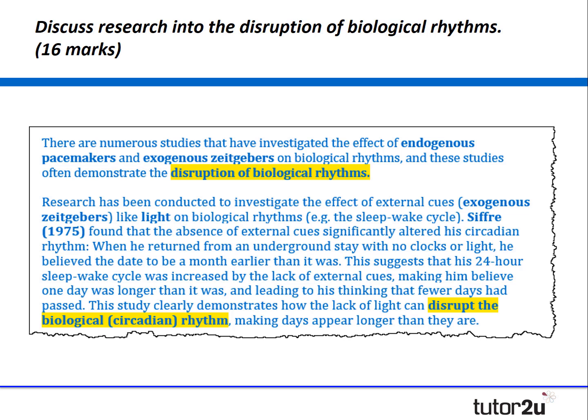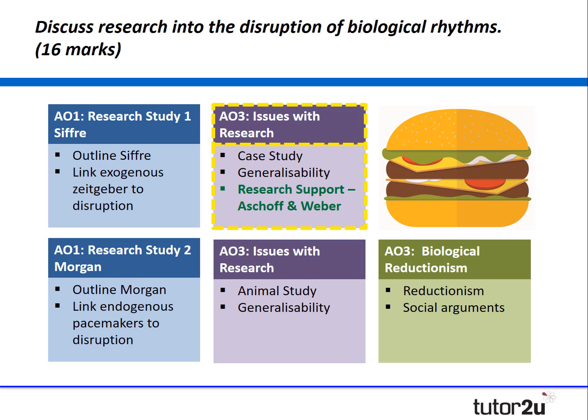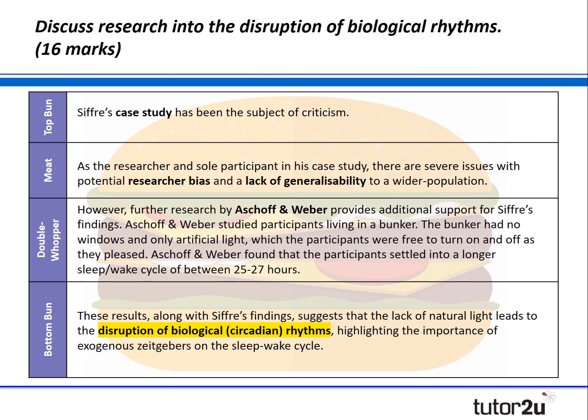Notice how I have signposted that answer twice — good knowledge of a study there, and that really forms part of half of our AO1. Now let's discuss the issues with Sifra's research. What I'm going to do is extend the evaluation using the double whopper technique and add in some further research support, starting with a criticism but then bringing in additional support to demonstrate that Sifra's findings are supported by other studies.